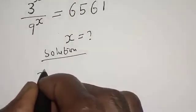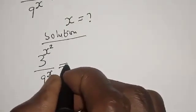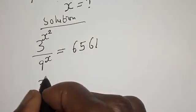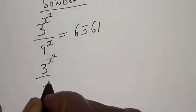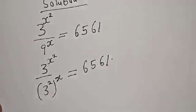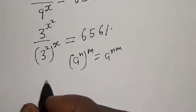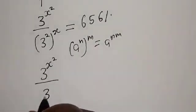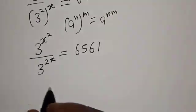We have the given equation: 3 raised to power s squared over 9 raised to power s is equal to 6561. Now, 9 raised to power s is the same thing as 3 squared raised to power s. Remember that if you have a raised to power n raised to power m, it is the same as a raised to power n times m. So we have 3 raised to power s squared over 3 raised to power 2s is equal to 6561.